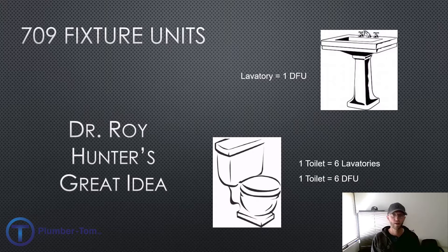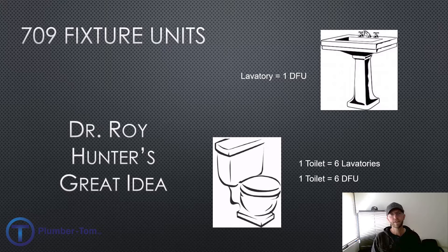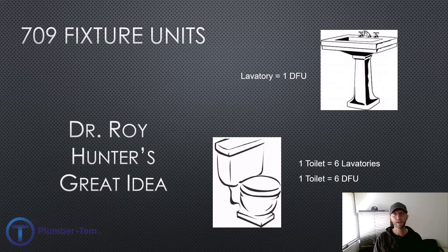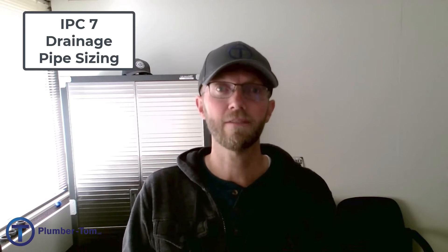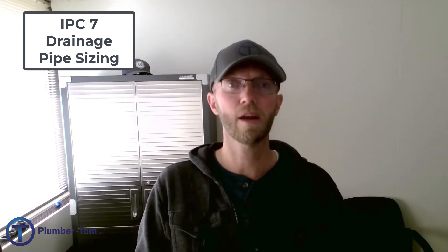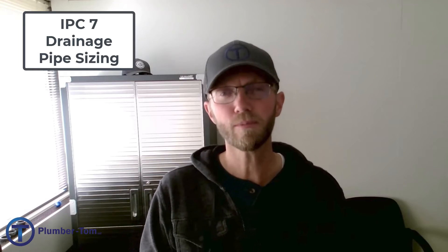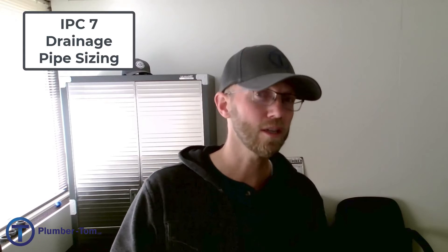Let's start with a little history. Some time ago there was a man named Roy Hunter who had this idea: what if we come up with some way of comparing how much a fixture would drain on a normal use? That would give us a way to gauge how much waste each one would put down and help us know how much we should allow down in a pipe. Early pipe sizing was all experimental — they just hooked fixtures up to pipes and mostly used large pipes like four-inch cast iron — but they needed a system.